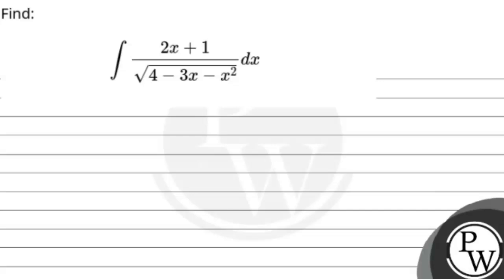Hello guys, let's read this question. The question says: find the integral of (2x + 1) upon root of (4 minus 3x minus x²) dx. This is an indefinite integral and we need to find its value.